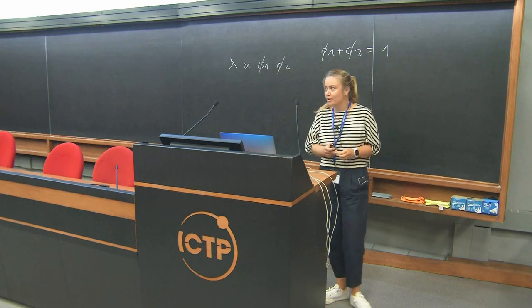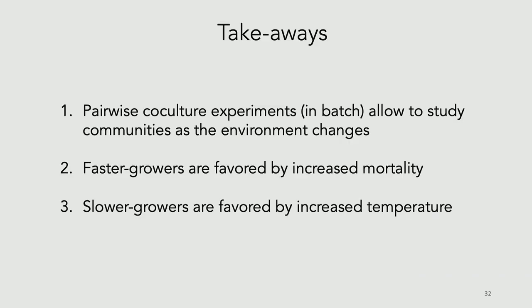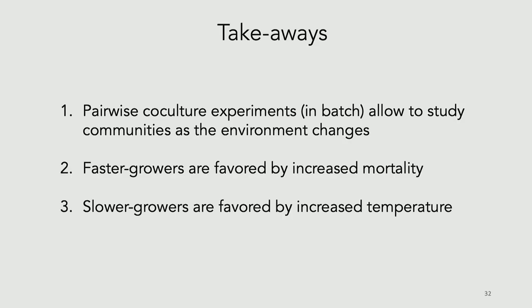Hello again. I thought we could start by recapitulating what we talked about last time. The first hour was to set the stage for the second hour. We saw some pairwise co-culture experiments, and despite some disagreement on the model, what we saw in the data is that when we increase mortality, faster growers were favored. And when we increase temperature, you can basically reverse the outcome of competition, and slower growers are favored.